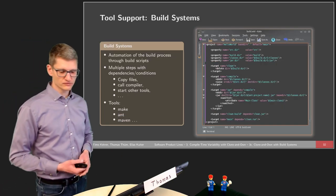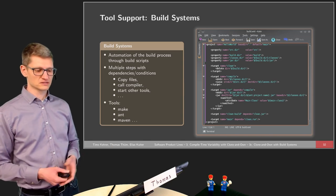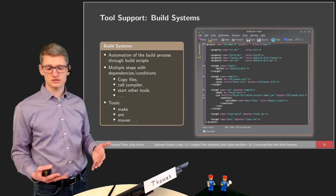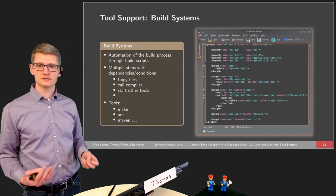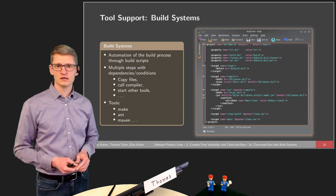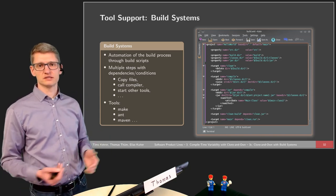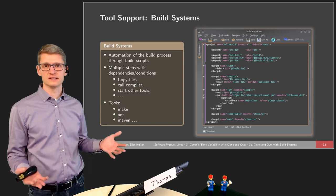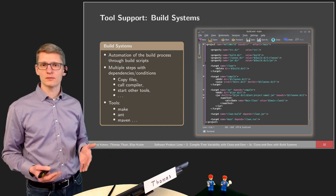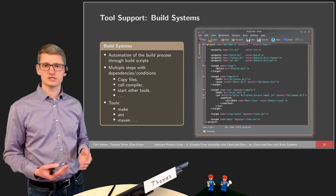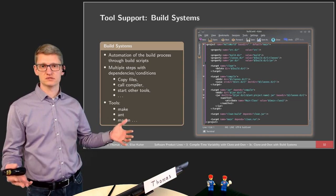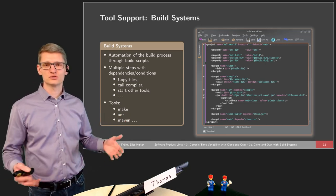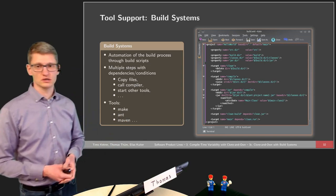The tools that support building systems are called build systems. A build system is an automation of the build process by means of build scripts. If you have a small Java program with just one single class, it's fairly straightforward to compile it. But for larger systems like Linux, it's far more complicated because there are many dependencies, many parts, and many ordering constraints on certain build steps.